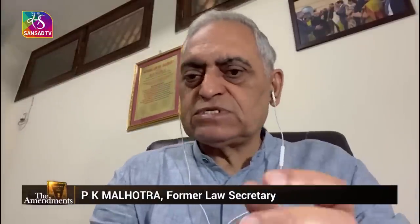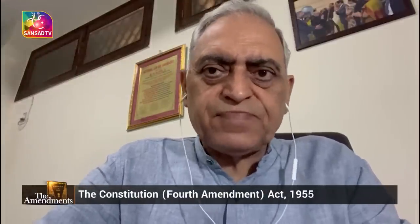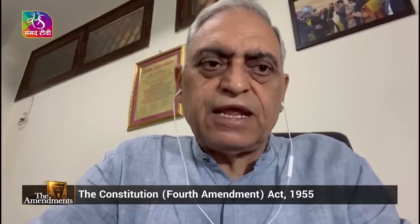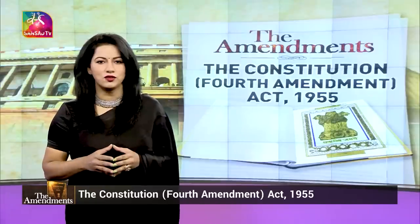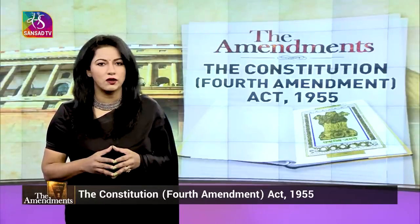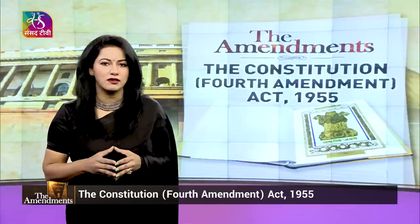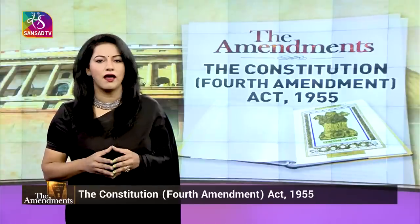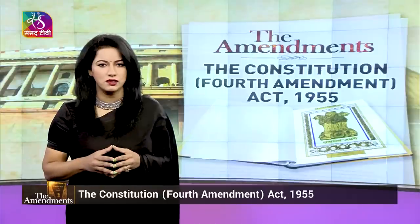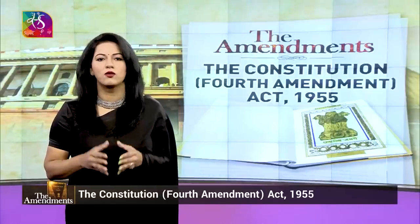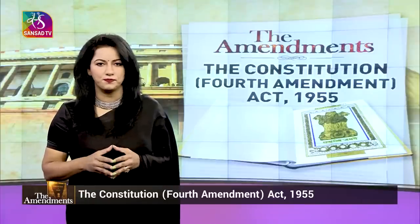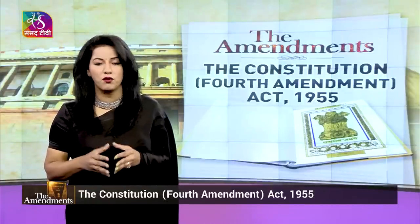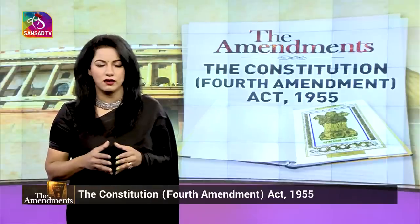Article 31, which was amended by the Fourth Amendment, has since been repealed by the Constitution's 44th Amendment Act in 1977. The Constitution's First Amendment Act of 1951 added the Ninth Schedule to the Indian Constitution. Laws contained in this Ninth Schedule are immune from judicial review. The Ninth Schedule was created by insertion of Articles 31a and 31b. Article 31a was inserted by the government in order to protect laws related to agrarian reforms and for abolishing the zamindari system. Article 31b of the Constitution provided that any law in the Ninth Schedule could not be challenged in the courts.